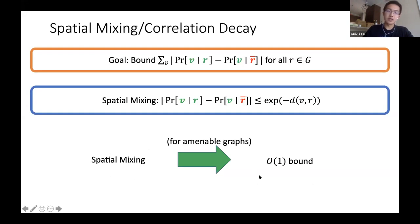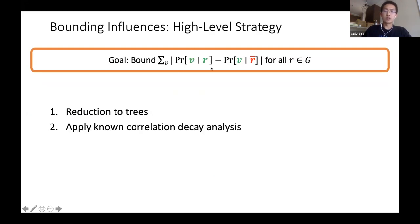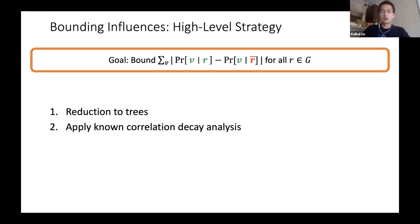To go beyond amenable graphs, we open up the analysis of how spatial mixing is obtained. The proof strategy is to reduce the problem to trees and use known correlation decay analysis. The first step is a reduction to trees: roughly speaking, to bound total influence it suffices to bound the total influence of the root in the associated self-avoiding walk tree. Intuitively, you follow the original proof by Weitz showing that marginals of a vertex are preserved when going to the SAW tree representation.